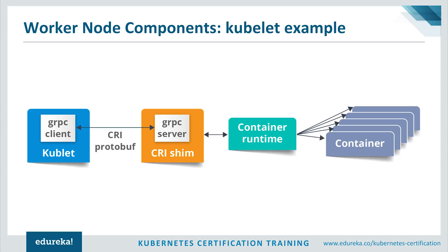Container runtimes used to be hard-coded in Kubernetes, but with the development of CRI, Kubernetes can now use different container runtimes without the need to recompile. Any container runtime that implements CRI can be used by Kubernetes to manage pods, containers, and container images. Two examples of CRI shims are Docker shim and CRI-containerd. With Docker shim, containers are created using Docker installed on worker nodes, and Docker internally uses containerd. With CRI-containerd, we can directly use containerd to create and manage containers.